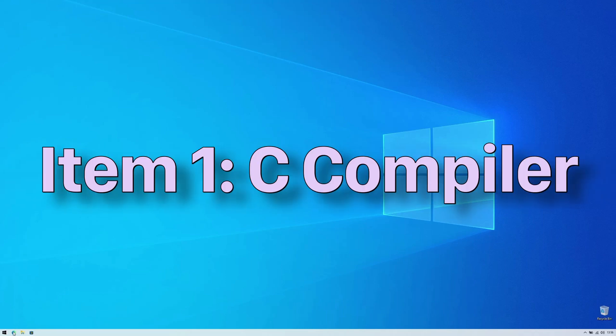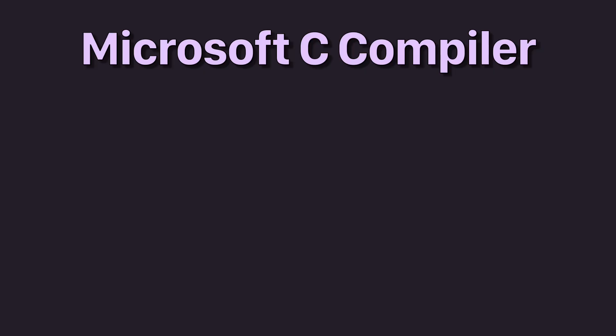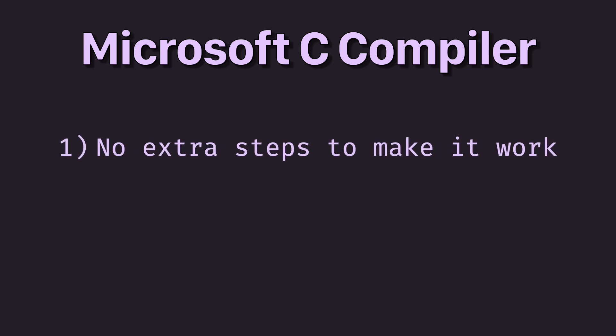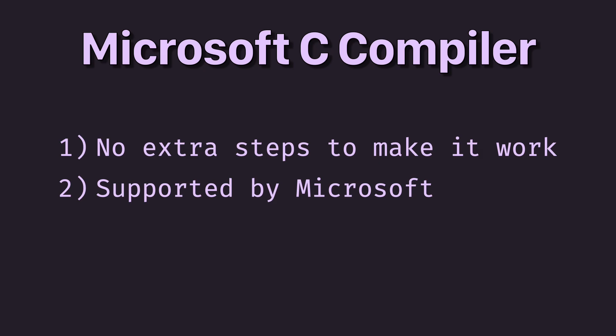The first thing that is required to build a C program is a C compiler. There is a plethora of options available for us to choose from, but I would like to stick to the Microsoft C compiler. The reason for that is, it does not require any extra steps that we need to worry about, and hopefully Microsoft will make sure that their own compiler on their own platform works without any issues. However, even if we stick to the Microsoft C compiler, there is at least two different ways to install it.